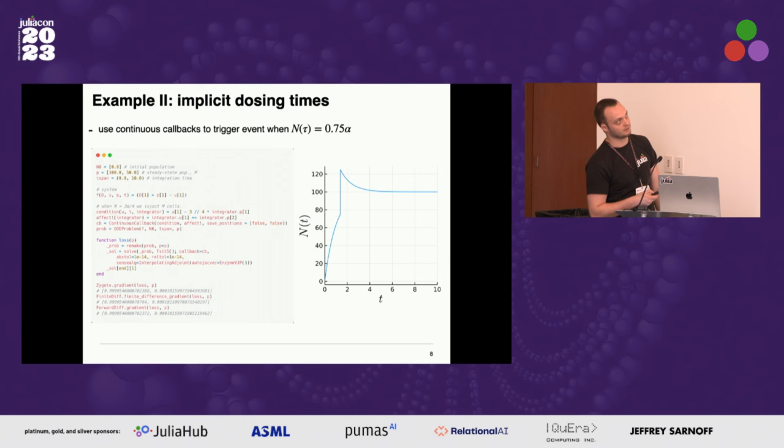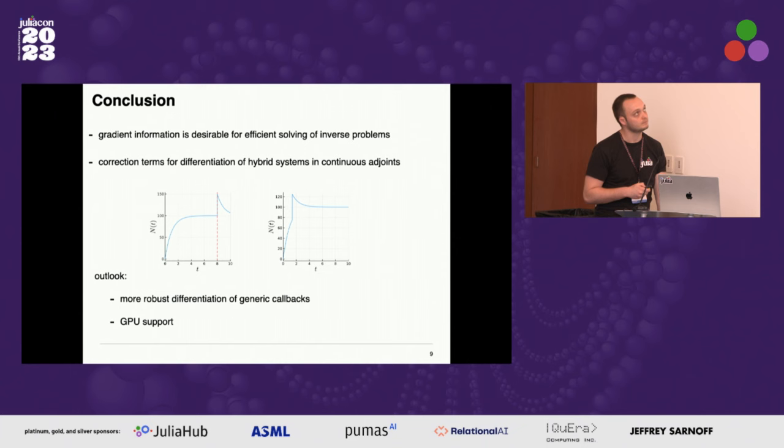For the second example very quickly, we can change the condition for the event time to be something that depends on the state, so we need these extra correction terms. The event is triggered here at 1.0. We can compute all gradients that we need to do, for example, some optimization.